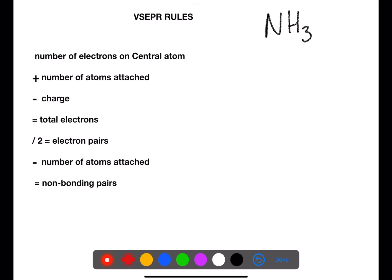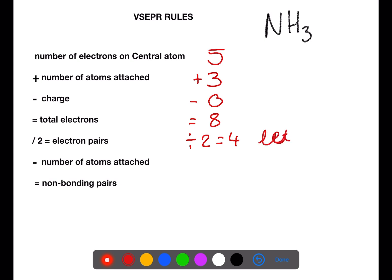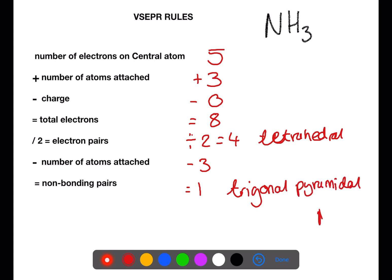Let's look at one example. Here we have NH3. There are five electrons on the central atom nitrogen. There are three atoms attached and there is no charge. This means we have a total number of electrons of eight. If we divide this by two, we find the number of electron pairs is four, so the shape for the electron pairs will be tetrahedral. If we then minus the number of atoms which are attached — three — we find that the number of non-bonding pairs is one. This means that the shape for the molecule will be trigonal pyramidal, allowing a space for the non-bonding pair within the tetrahedral arrangement of the electron pairs.